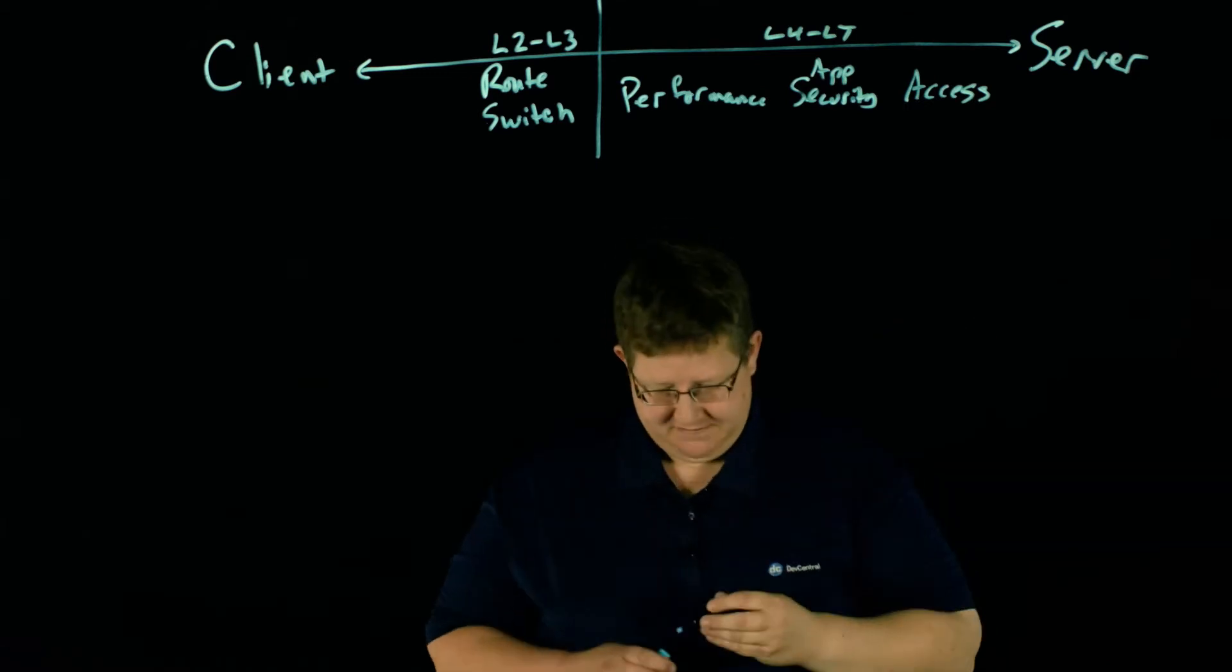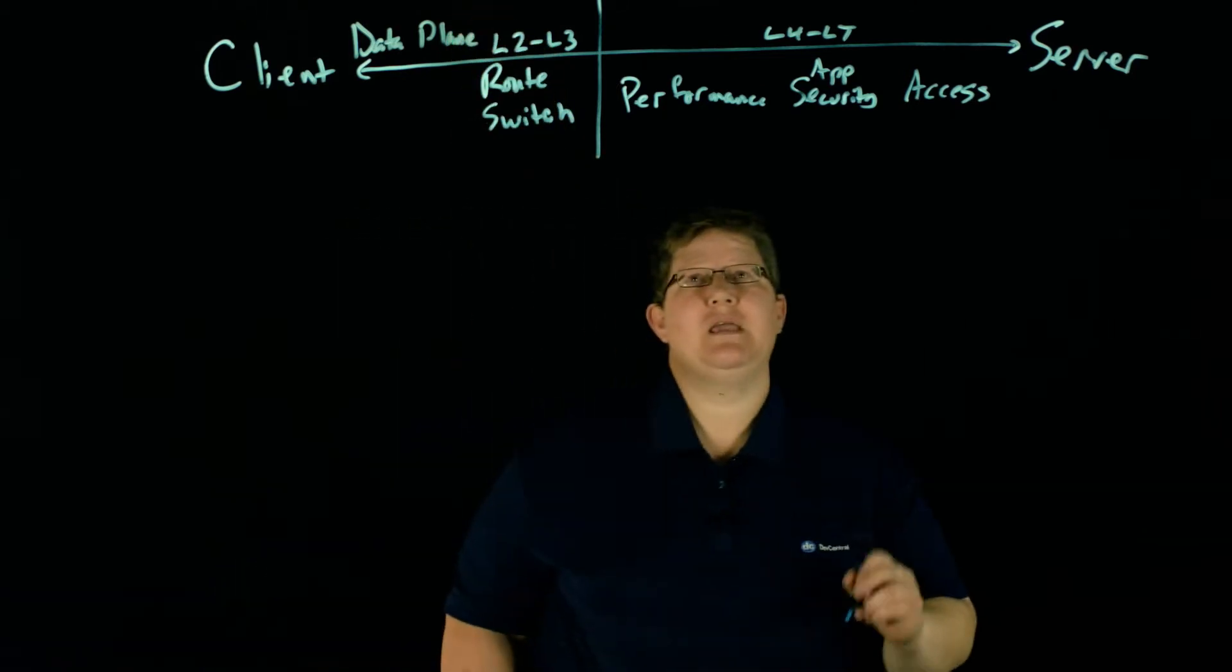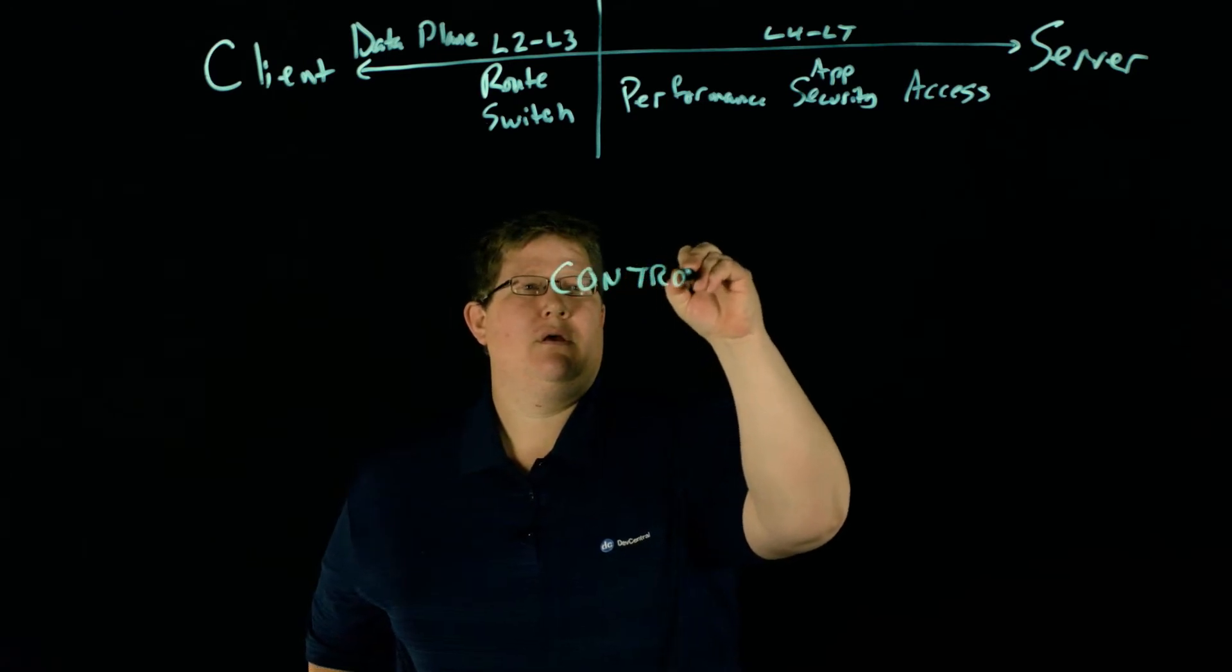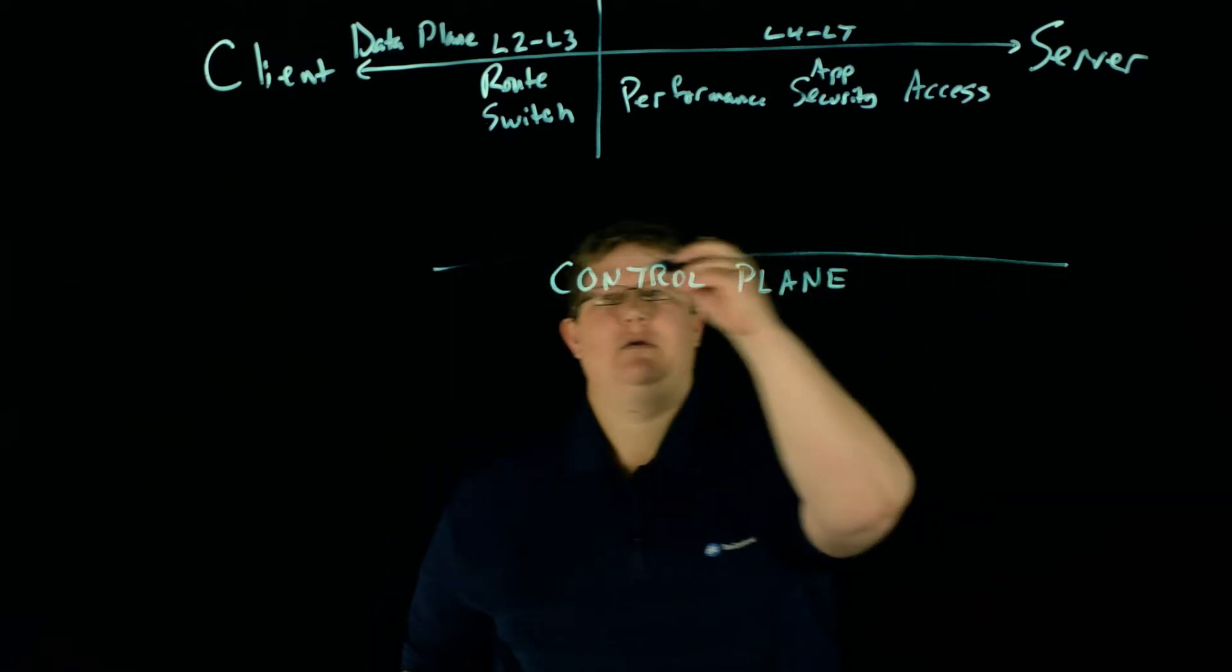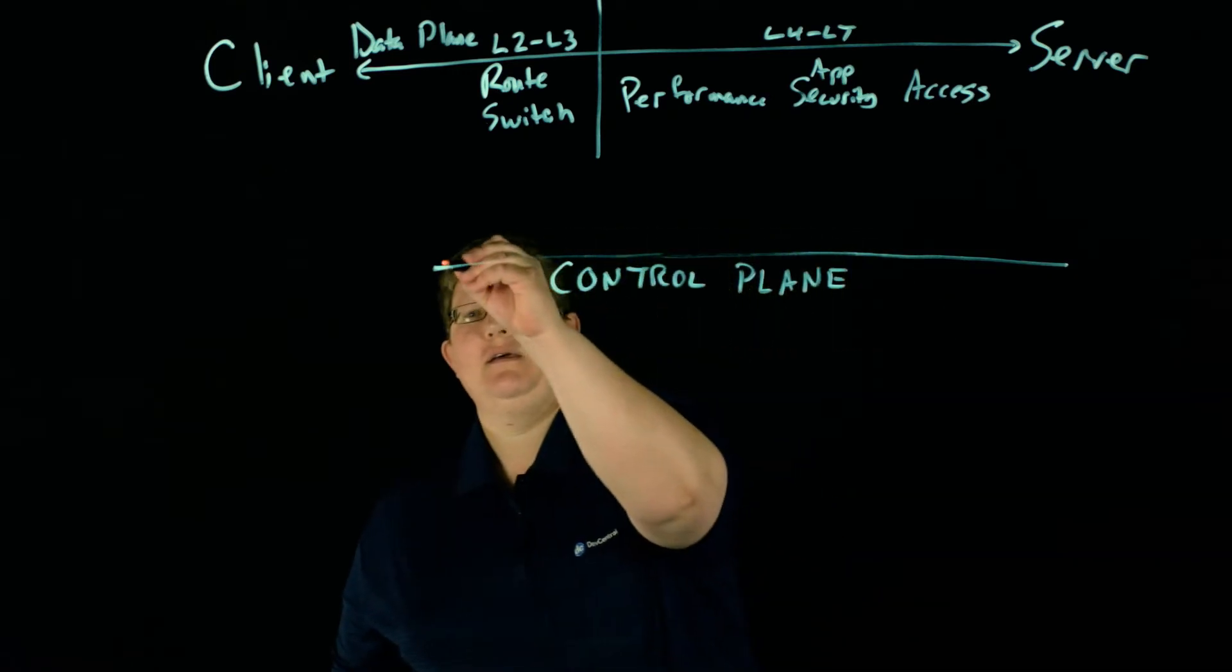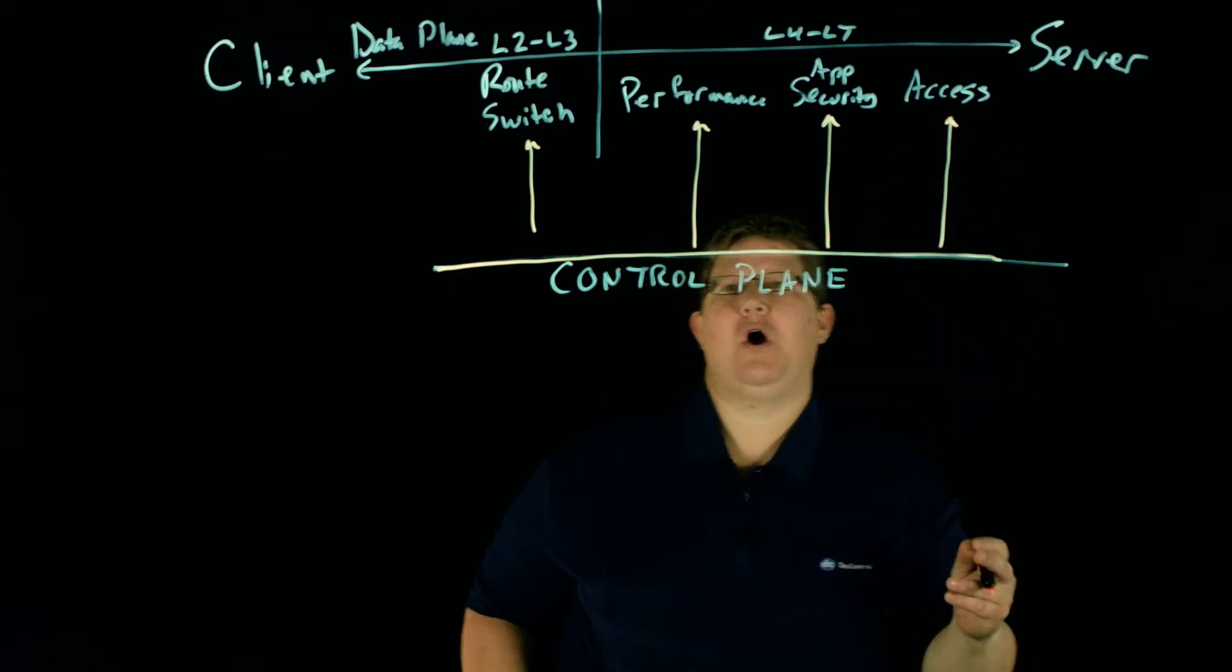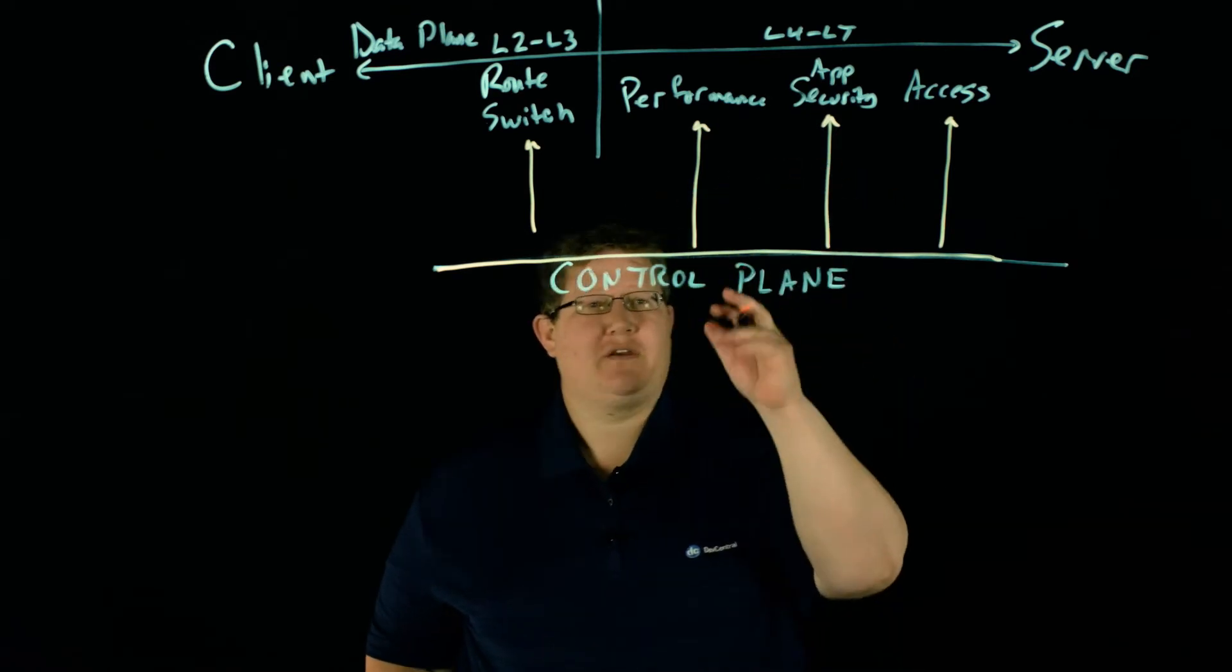And so on the data plane, all of this is happening to traffic as it flows through the box. What we're talking about with iCall is the control plane. So the control plane gives you access to make changes to all of these different controls on traffic as it comes through the data plane.